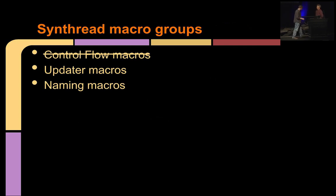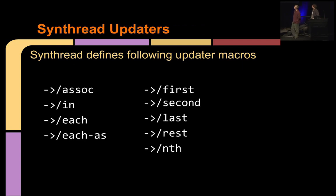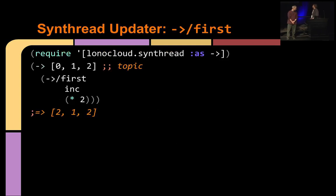Well, there's some other macros in Synthread as well. Let me tell you about them. So these are the macros that we call updater macros. And again, you can see that a lot of these words are familiar. We've got a couple new ones down there, each, but the analogies here should be pretty clear. And we'll just talk about a few of them. You say they're updater macros? Let me show you what I mean by that.